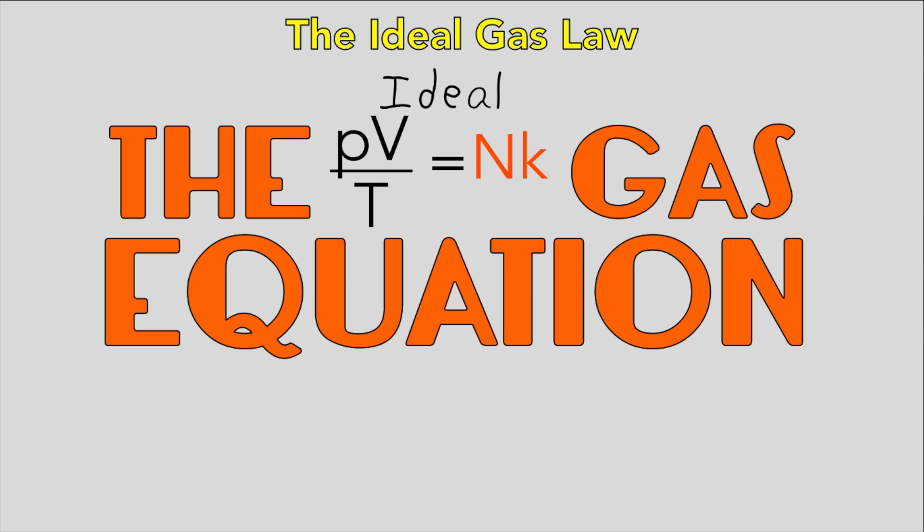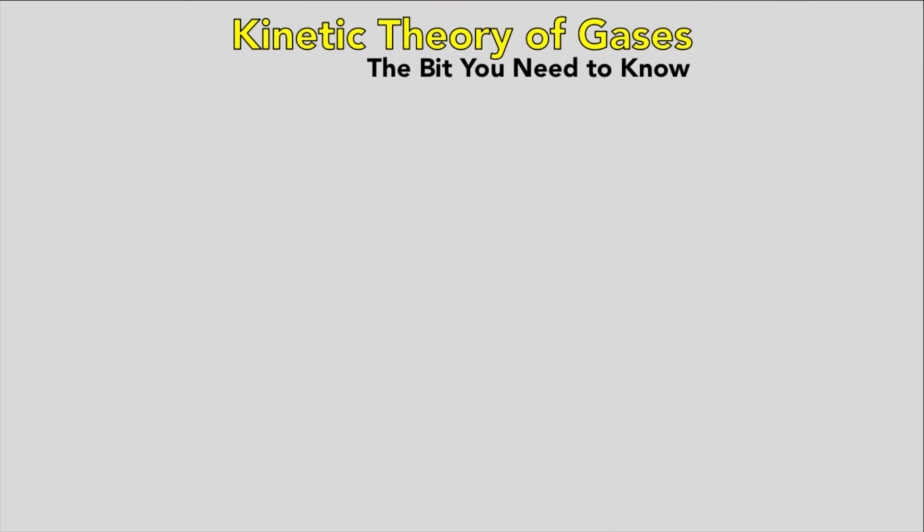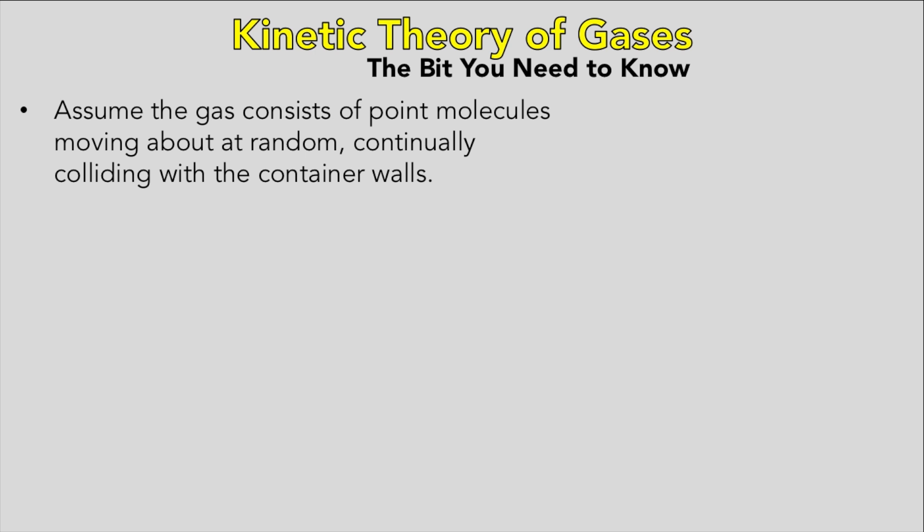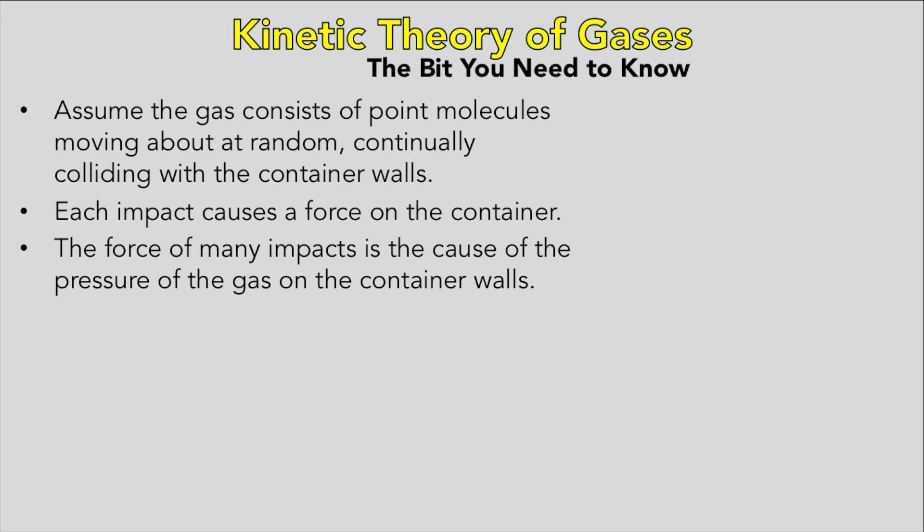On to kinetic theory of gases, part one. We've separated this into three parts because it's so lovely, but we've done it all and you just need to be aware of it. The gas laws can be explained by assuming the gas consists of point molecules moving about at random, continually colliding with the container walls. Each impact causes a force on the container. The force of many impacts is the cause of the pressure of the gas on the container walls.